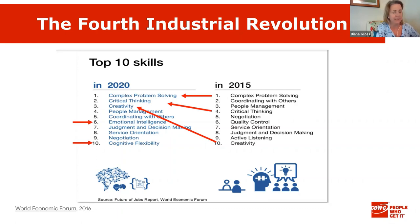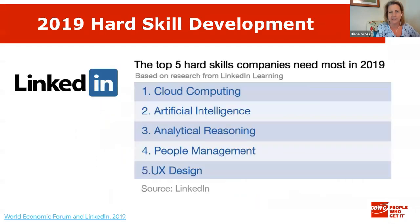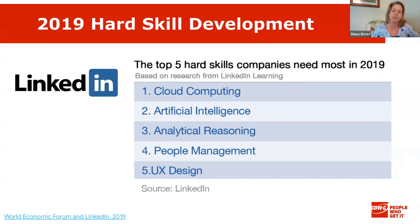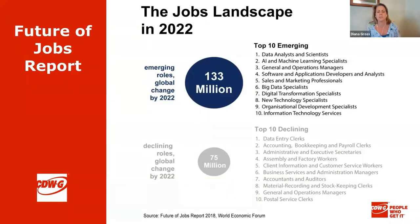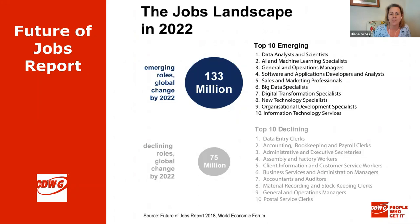From LinkedIn 2019, the top skills sought include cloud computing and artificial intelligence — confirming predictions about the fourth industrial revolution. Analytical reasoning, user design, and people management are also top skills companies are needing. The Future of Jobs report from 2016 predicted that by 2022 we'd need data analysts, AI skills, and machine learning skills — and indeed even in education we're now looking at data analysis and how to prepare students for that.